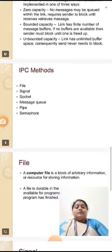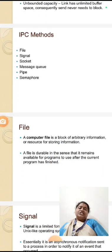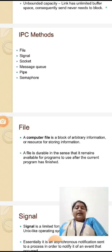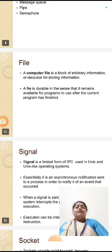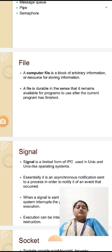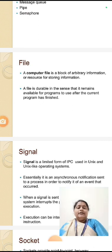We can see what are the inter-process communication methods. There are six types of IPC methods. First is file, second is signal, third is socket, fourth is message queue, fifth is pipe, and sixth is semaphore. A computer file is a block of arbitrary information or a resource for storing information. A file is durable in the sense that it remains available for programs or users after the concurrent program has finished.